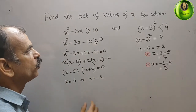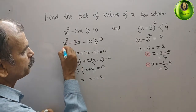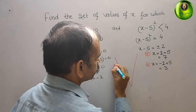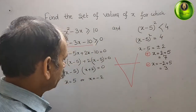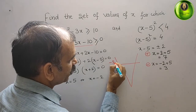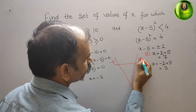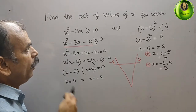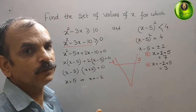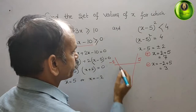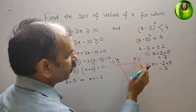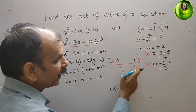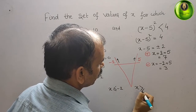Now for the first inequality, the equation is positive, meaning we get a minimum point, so the parabola opens upward. On the number line, x equals minus 2 is on the left and x equals 5 is on the right. Since we need greater than or equal to zero, we move toward the positive sides: x should be less than or equal to minus 2, or x should be greater than or equal to 5.